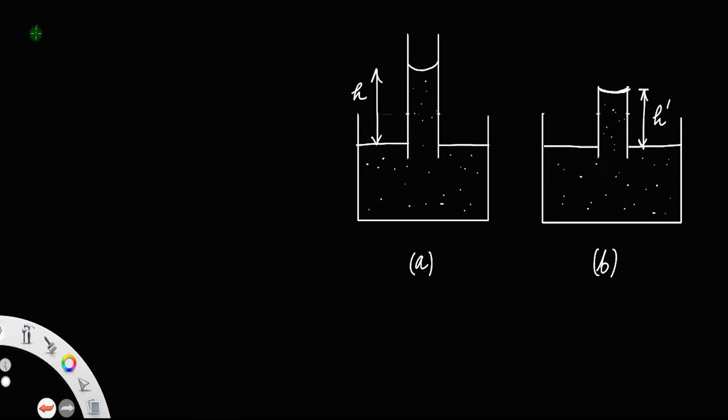For that, let us take the equation: h equals 2σ cos θ divided by rρg.